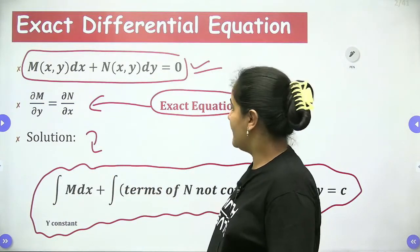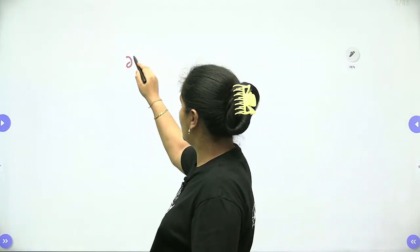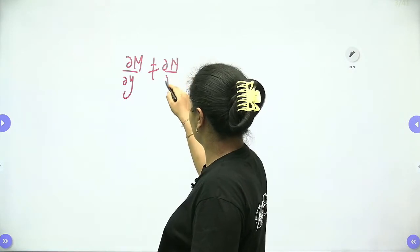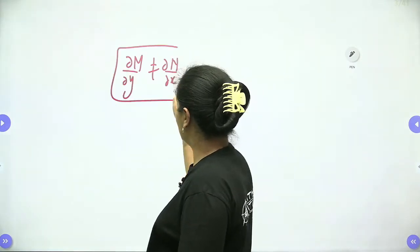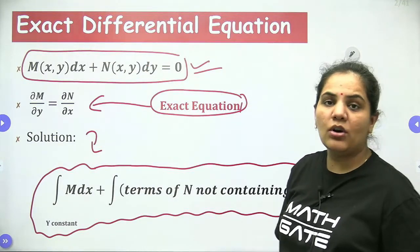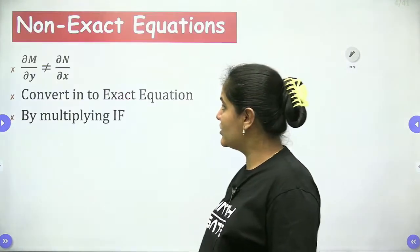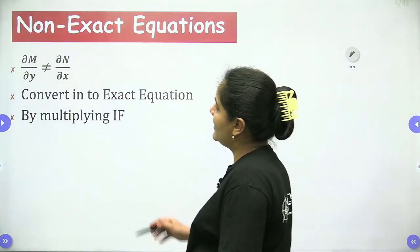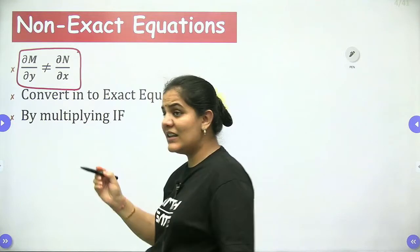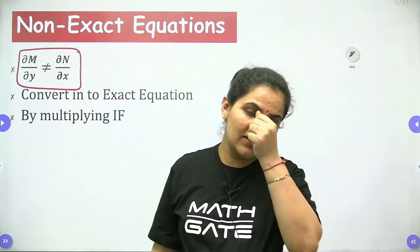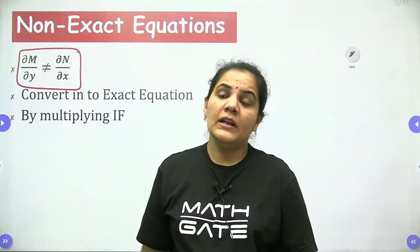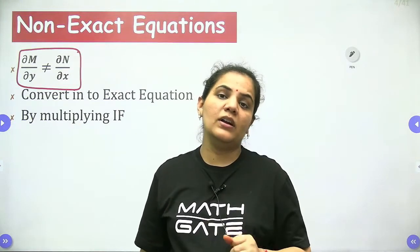When a differential equation does not satisfy ∂M/∂y = ∂N/∂x, even if it is of the form M dx + N dy = 0, it is called a non-exact differential equation. So if ∂M/∂y ≠ ∂N/∂x, then the equation is non-exact.